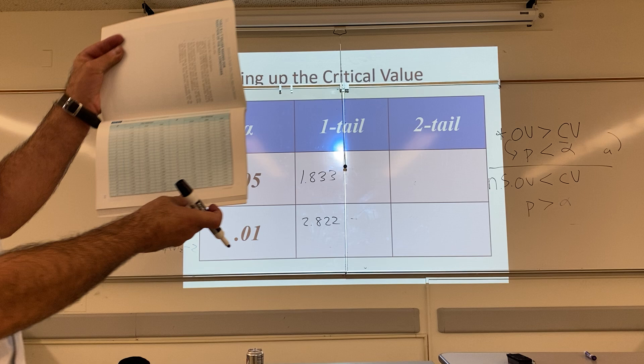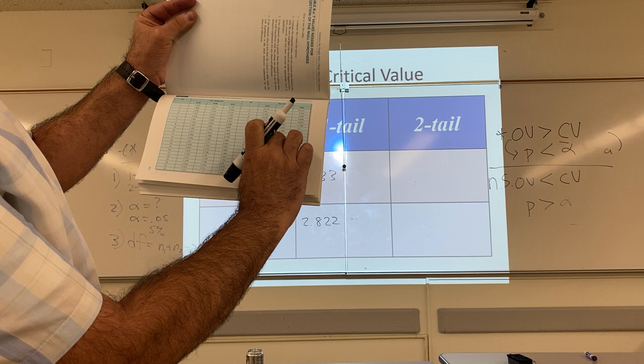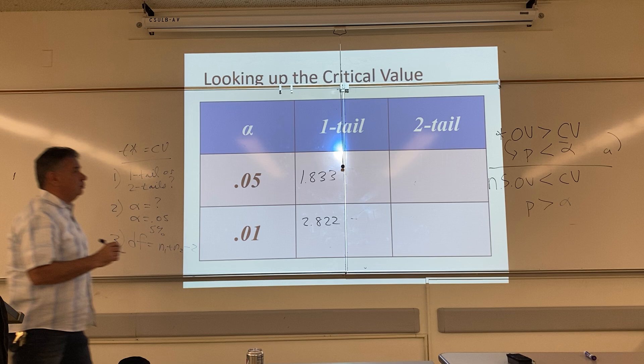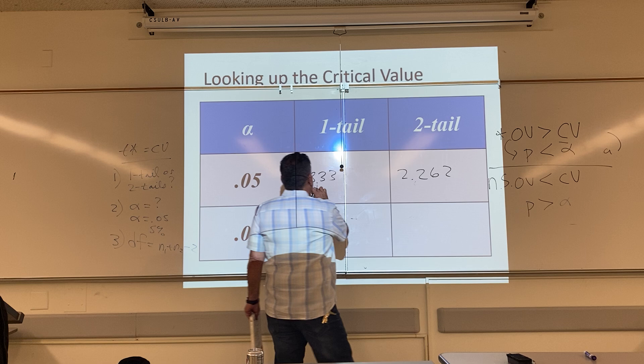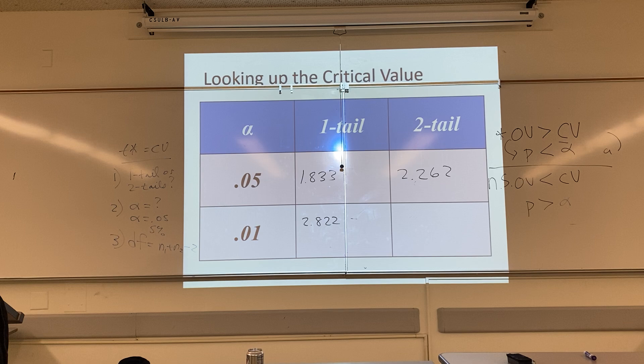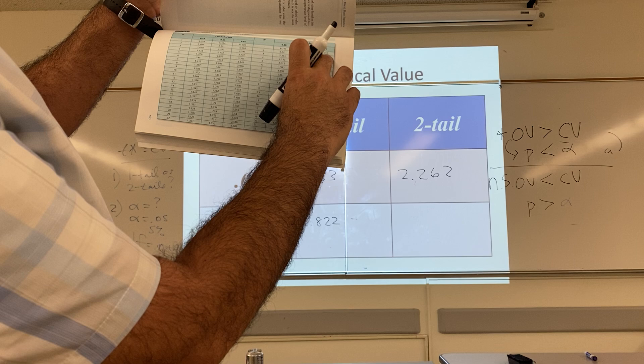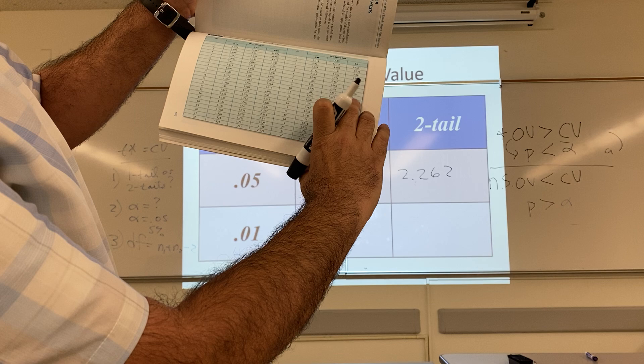Now let me look up the answers for the two-tailed test. Two tails, 5%, 9 degrees of freedom — the answer is 2.262. Notice that all these critical values have three decimal places. That's why my answer needs to have three decimal places, so I can compare apples to apples. And then lastly, the two-tailed test at 1% with 9 degrees of freedom is 3.250.